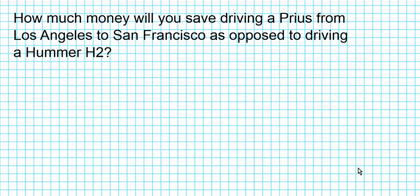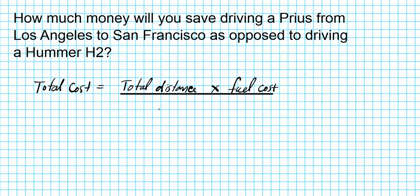So let's say you're traveling from Los Angeles to San Francisco and you want to rent a car. So you have two choices, a Prius and a Hummer H2. How much gas will you save if you rent a Prius as opposed to a Hummer H2? So first of all, we're going to calculate the costs of riding a Prius from Los Angeles to San Francisco. We're going to be using the formula total cost is equal to the total distance you're traveling, multiply that by the fuel costs, divided by your fuel economy.